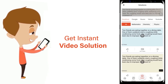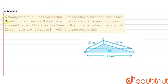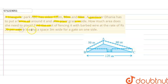In this question, a triangular park ABC has sides 120 meters, 80 meters, and 50 meters. A gardener Dhania has to put a fence all around it and also plant grass inside. We need to find how much area she needs to plant, and find the cost of fencing it with barbed wire at the rate of rupees 20 per meter, leaving a space of 3 meters wide for a gate on one side.